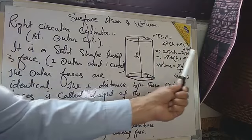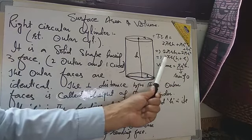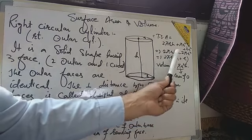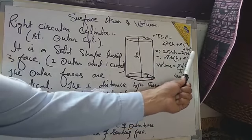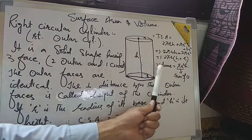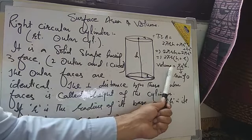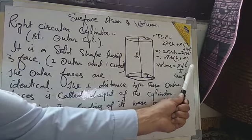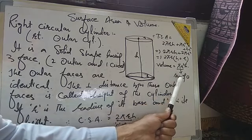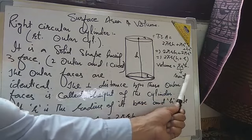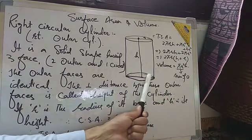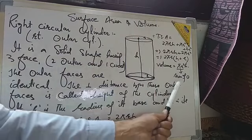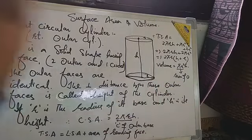Taking common terms — 2, π, and R are common — H remains from the first and R remains from the second, giving total surface area = 2πR(H + R). Volume of the cylinder is πR²H, where πR² is the area of the circular base; when multiplied by the height, we get the volume of the cylinder.